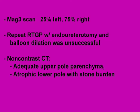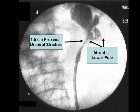This was unsuccessful and he continued to have stricture and pain. A non-contrast CT showed adequate upper pole parenchyma, but an atrophic lower pole and some minimal stone burden in the lower pole. This is a retrograde that was performed after the two PCNLs. Notice the 1.5 cm proximal ureteral stricture and the atrophic lower pole that is the sequela of the two outside percutaneous nephrolithotomies.